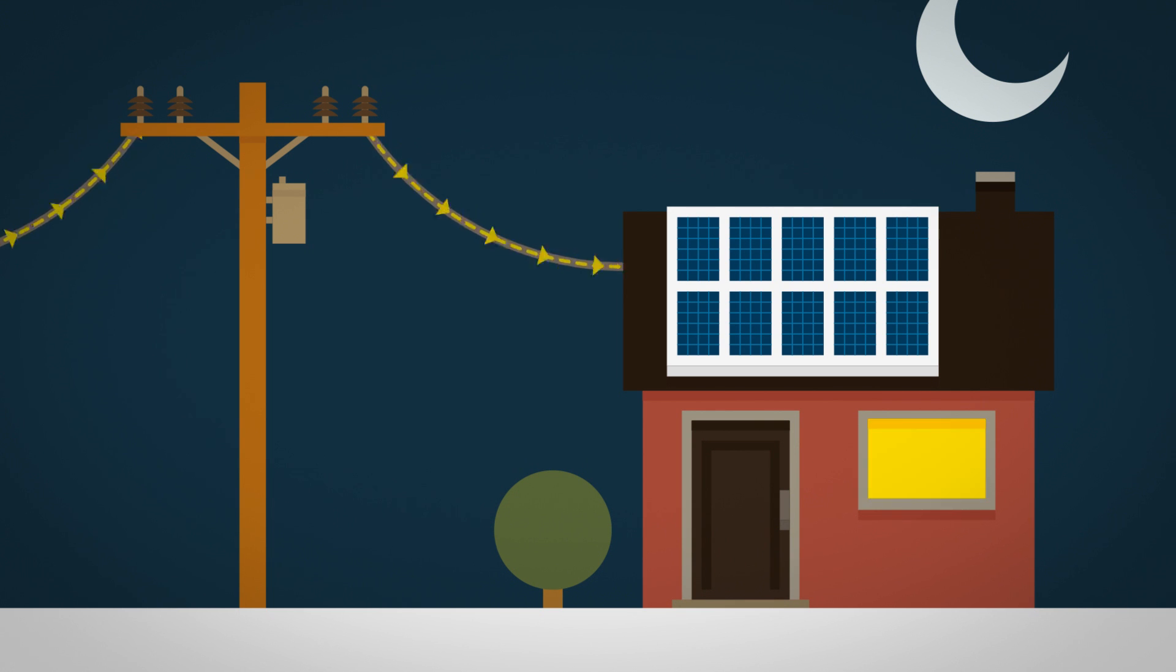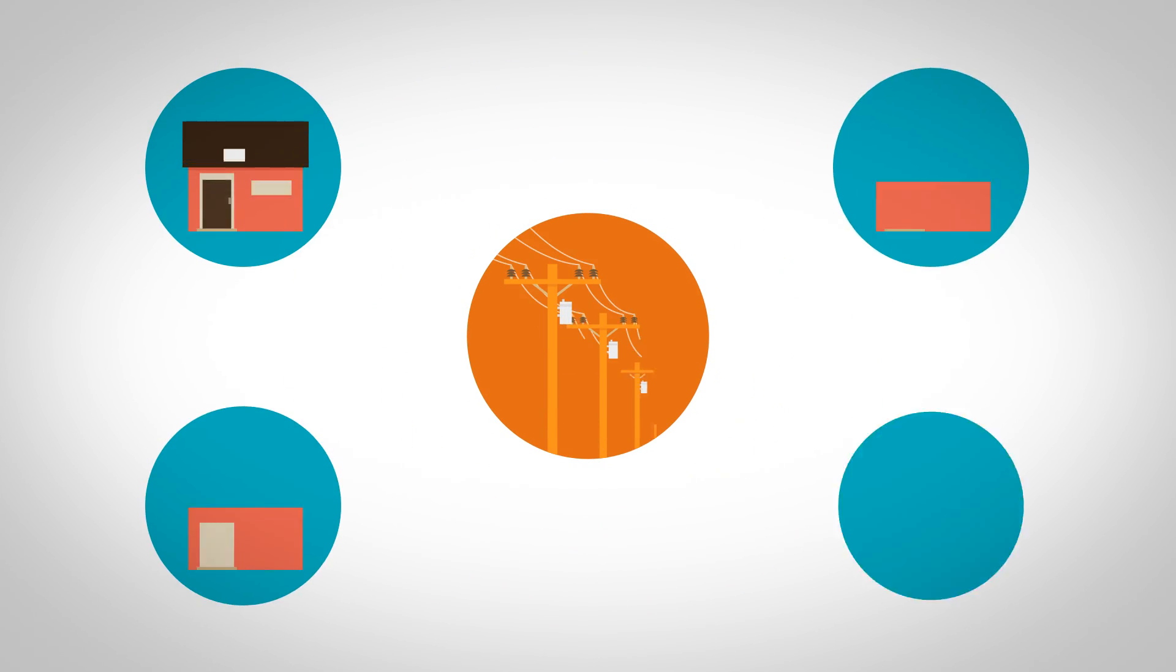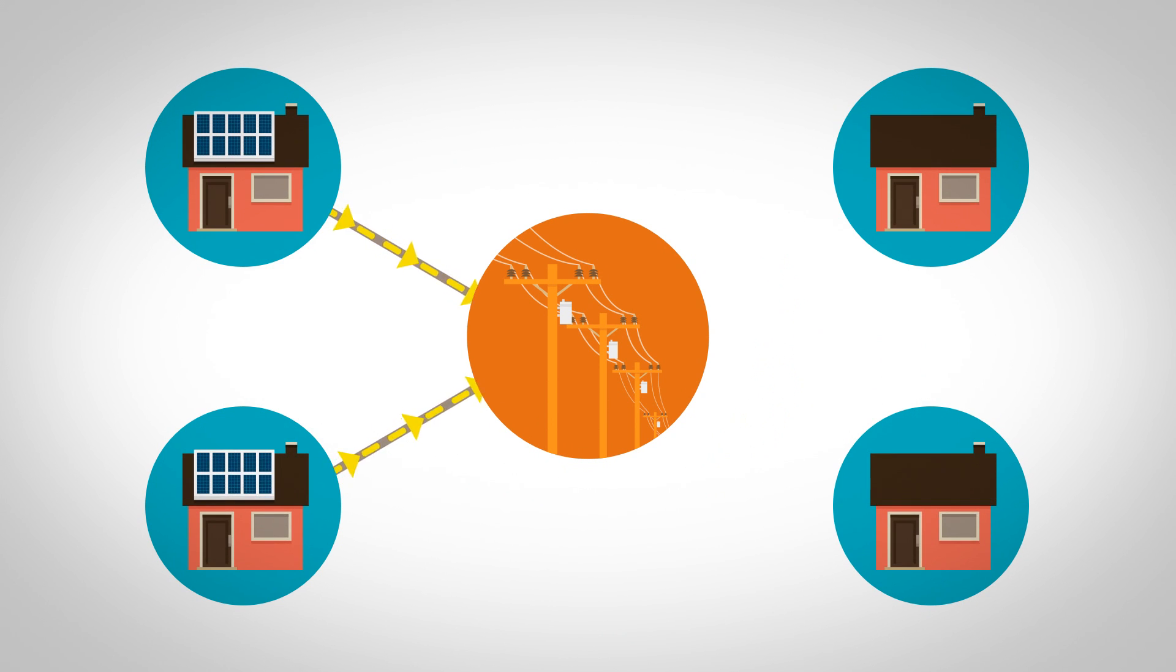This two-way flow has its advantages and challenges. When they're generating energy, homes with rooftop solar can provide clean power for neighboring homes and communities across the islands.